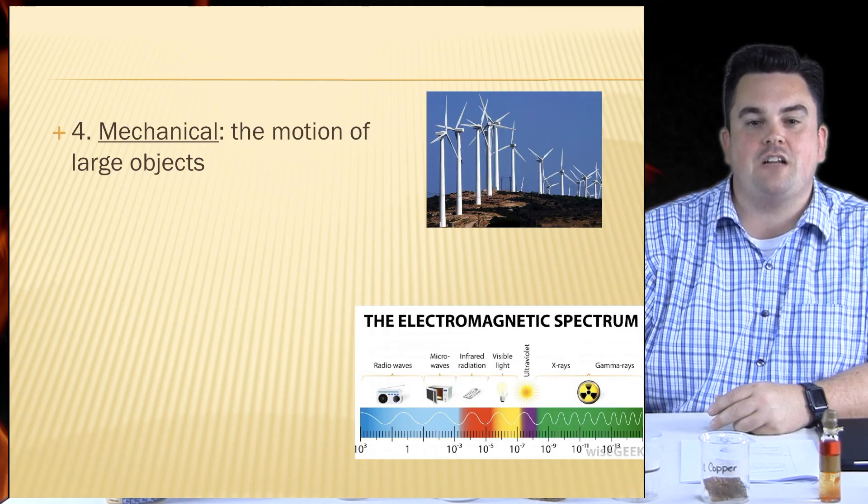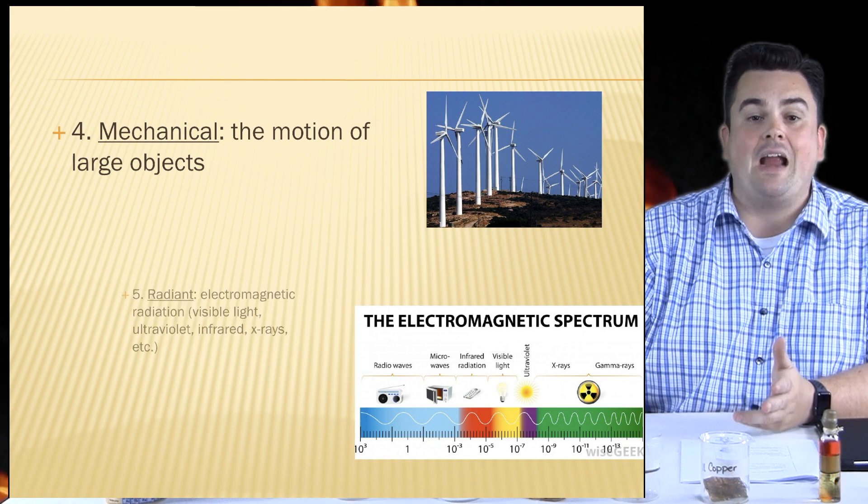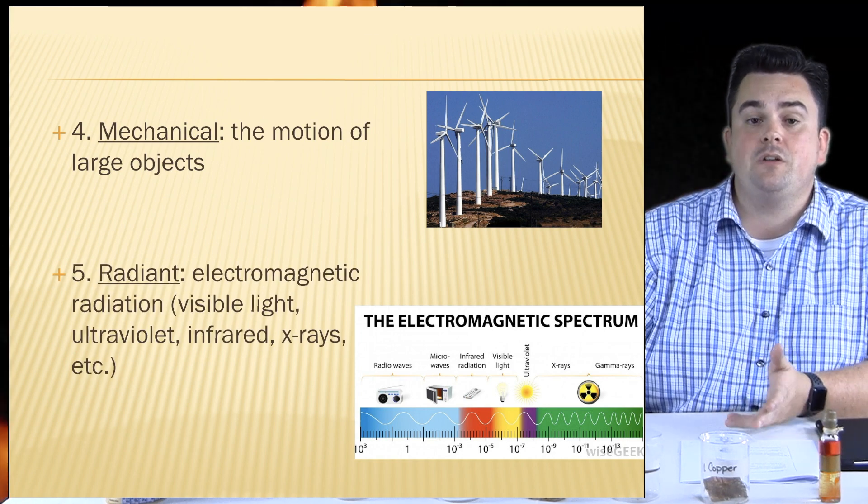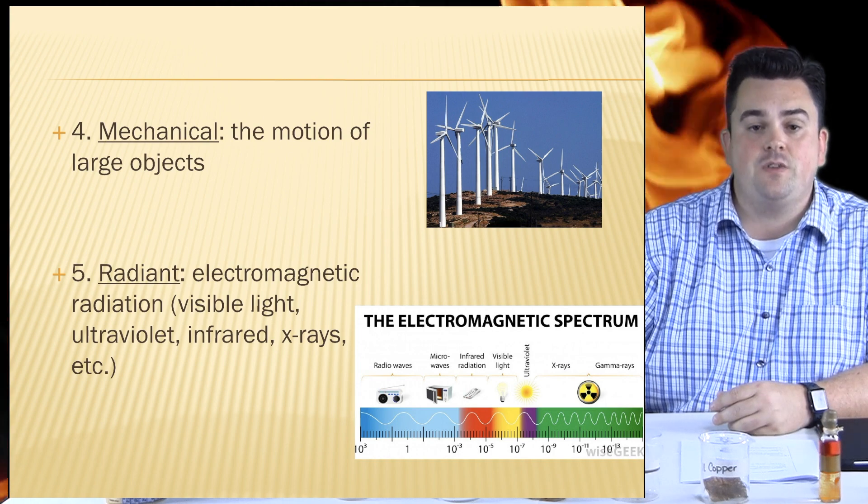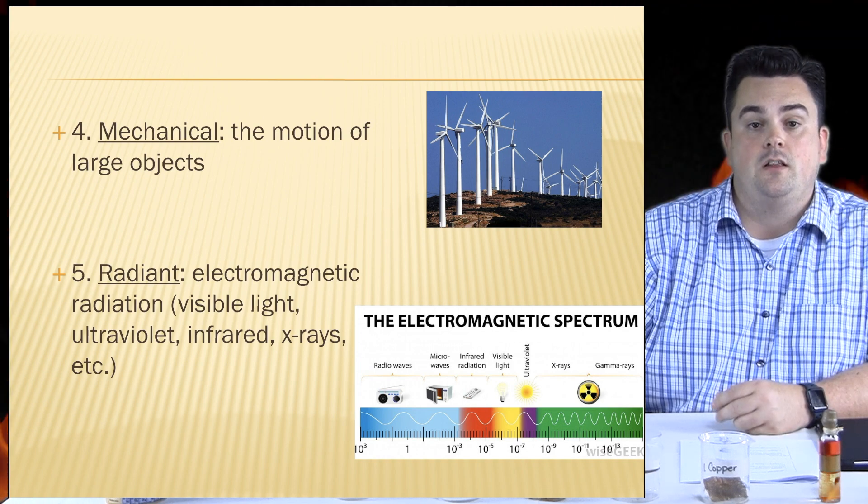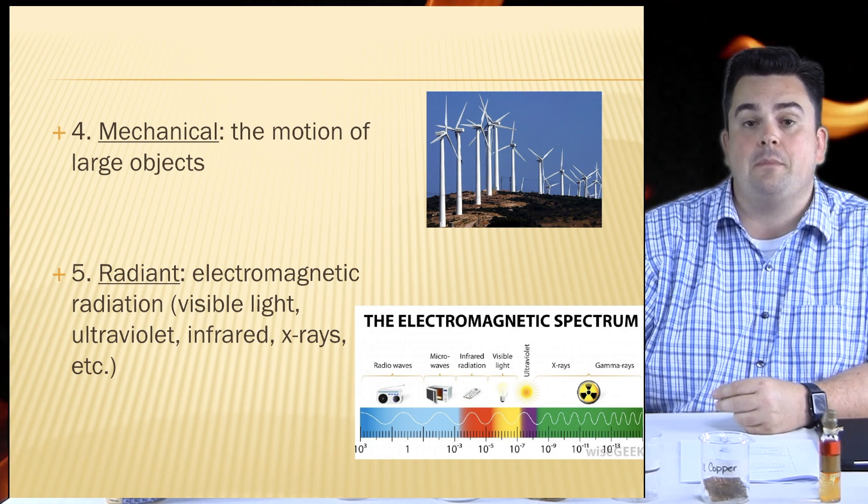Mechanical is the motion of large objects. Radiant, electromagnetic radiation. This is also known as light. But it's not just visible light. It includes ultraviolet, infrared, and x-rays. This also travels through empty space.